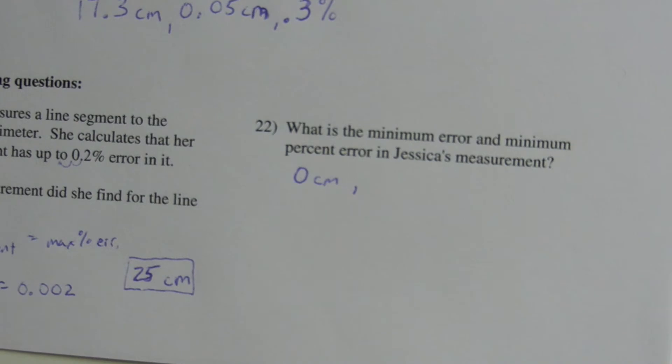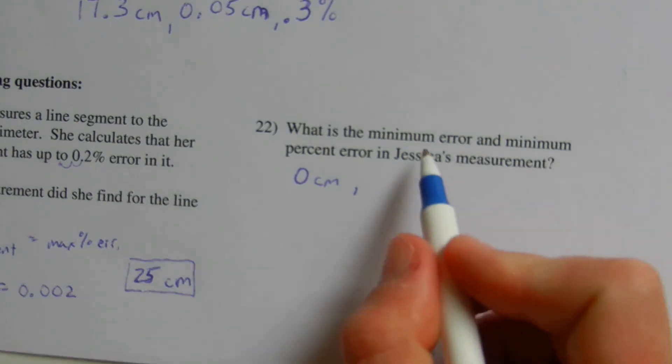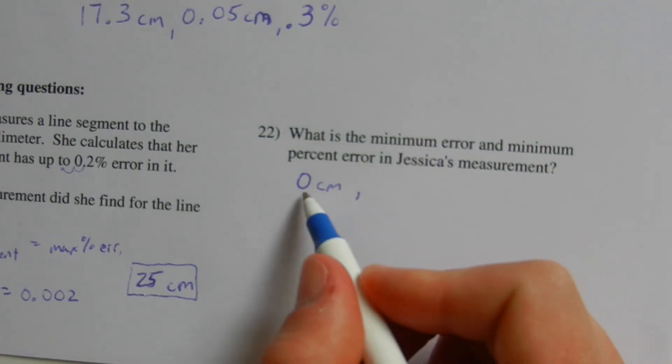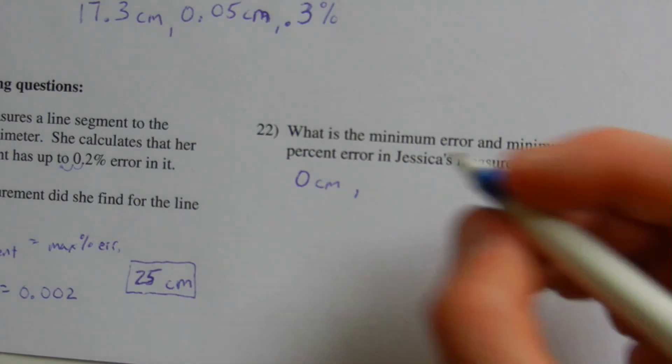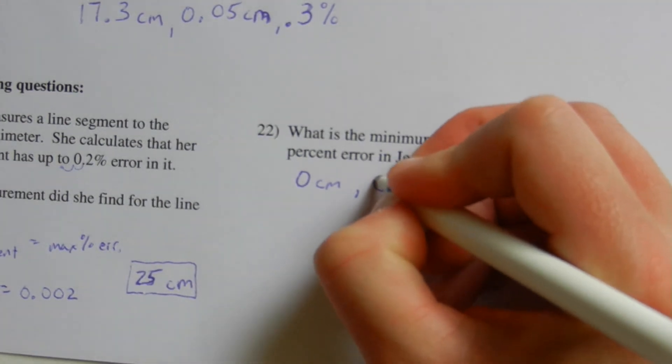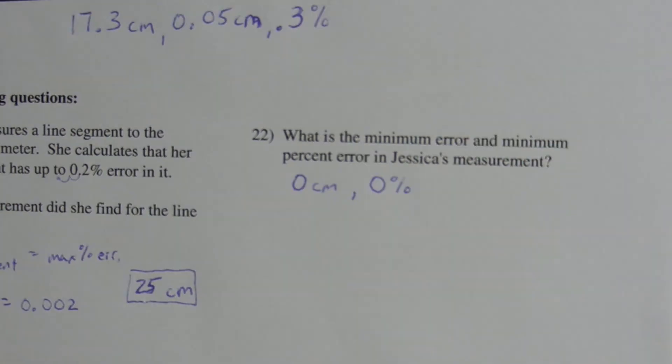So if we're trying to calculate the minimum percent, we take that minimum error and divide it by her measurement. So 0 divided by any number is 0. So that will be 0%.